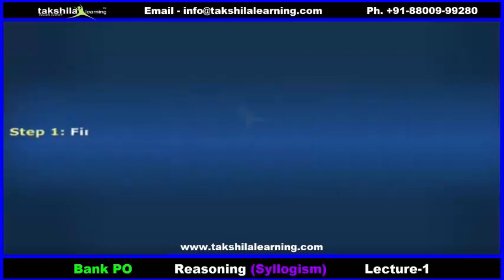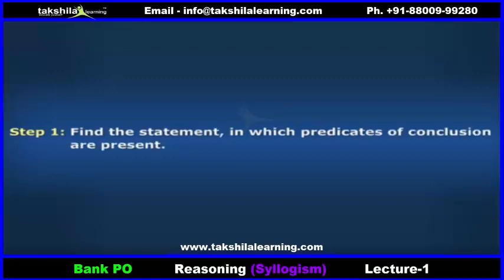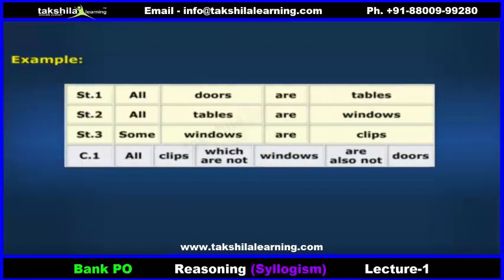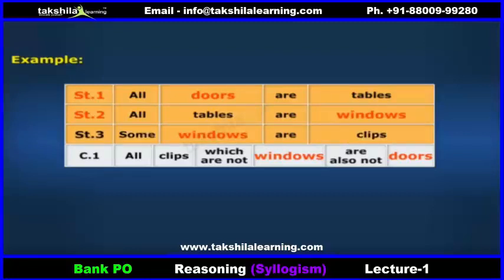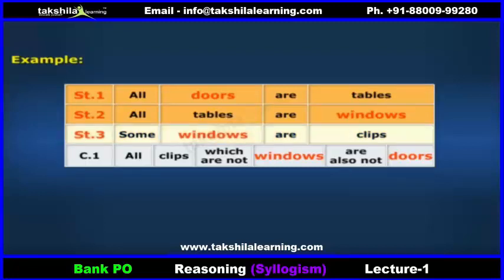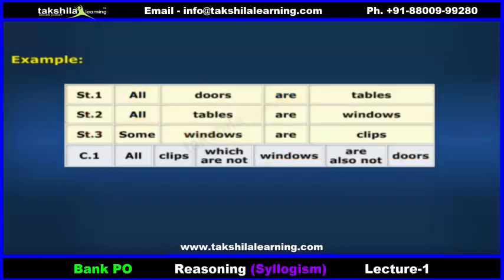Step 1: See in which statements the predicates of the conclusion are present. Like here, windows and doors are present in statements 1 and 2. Windows is also present in statement 3, but we have to see which route we have to follow. We can see in two statements there is a connection that can be established.